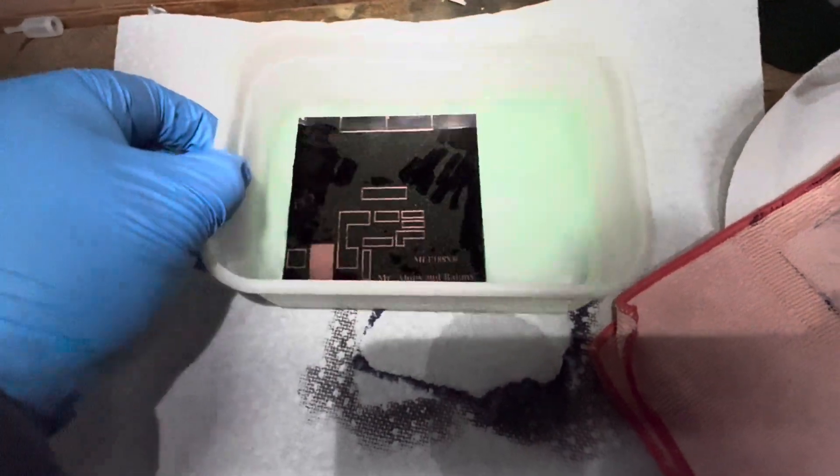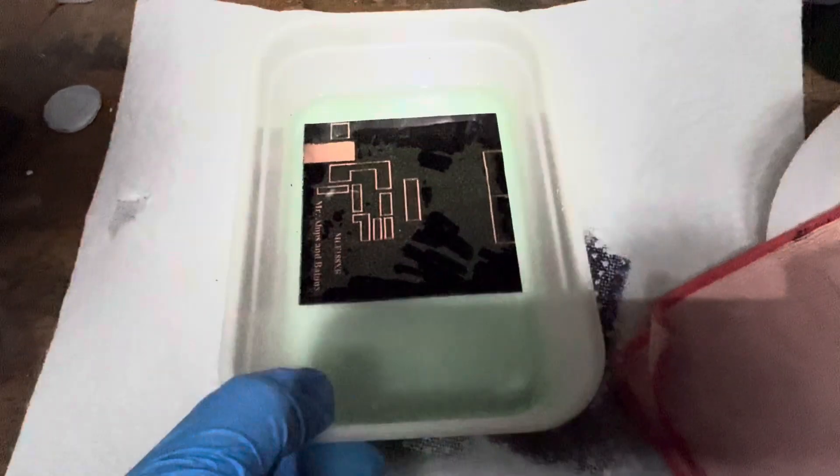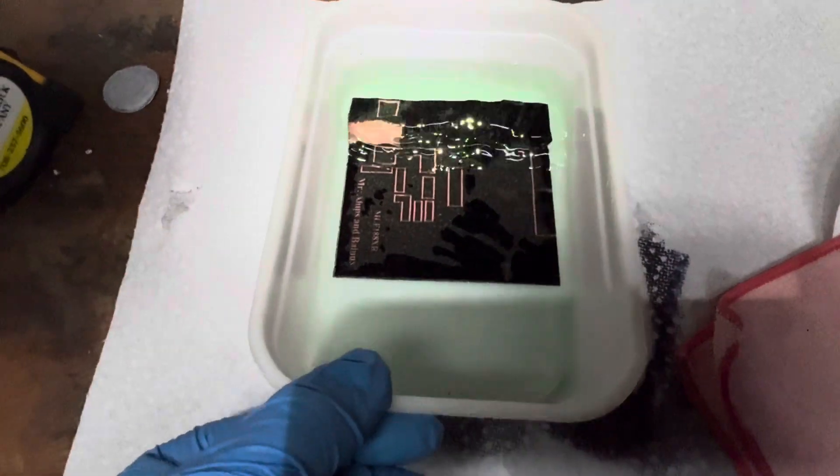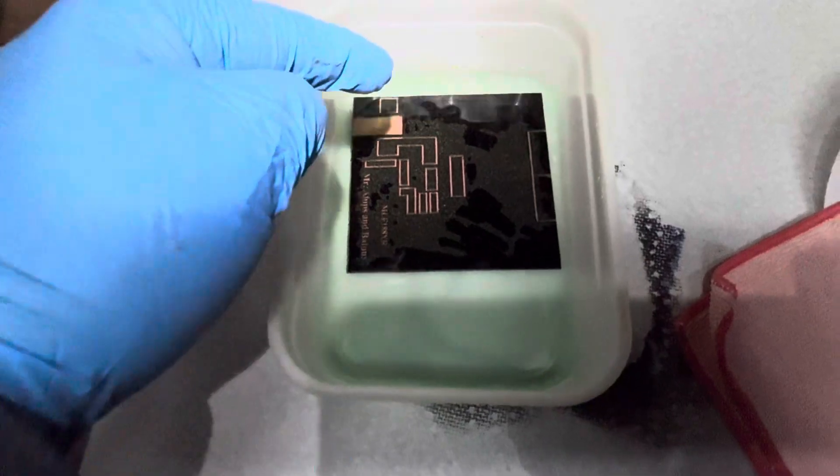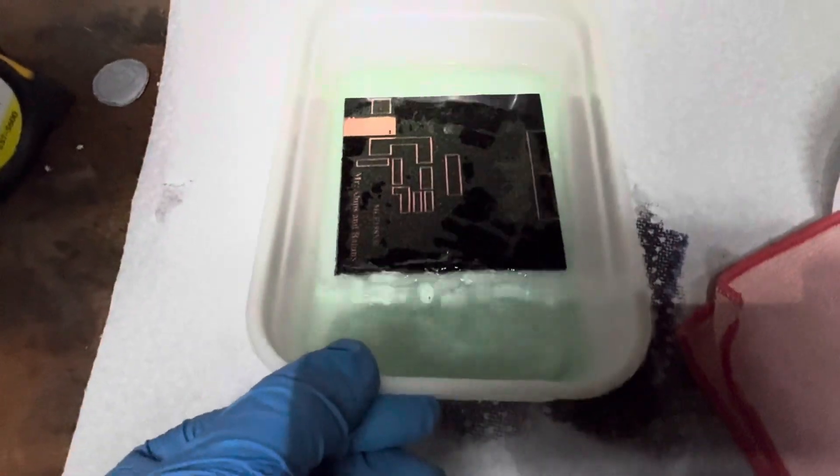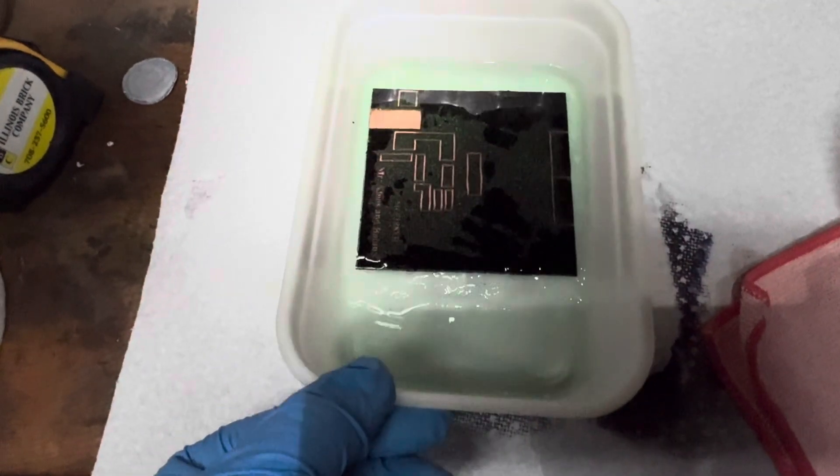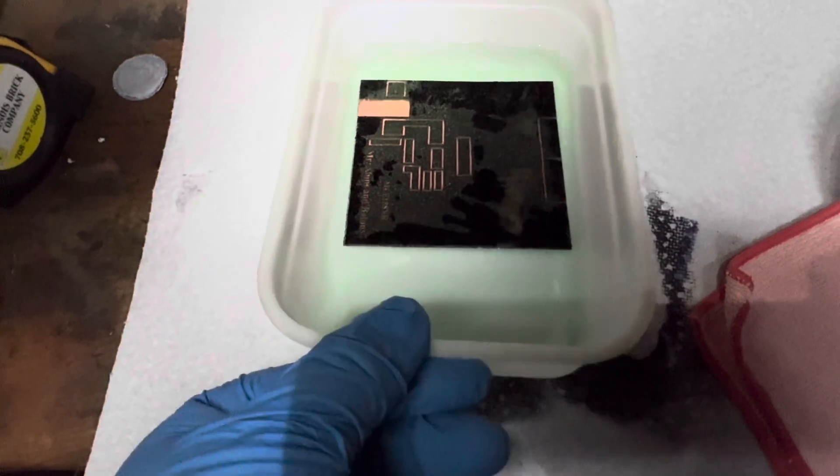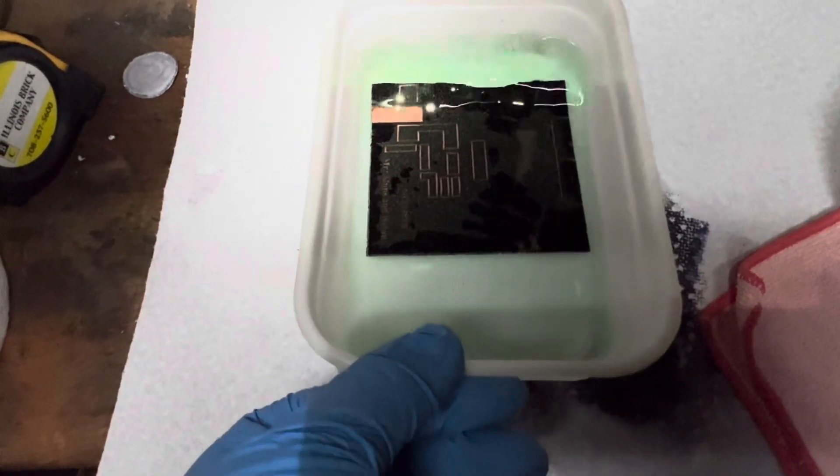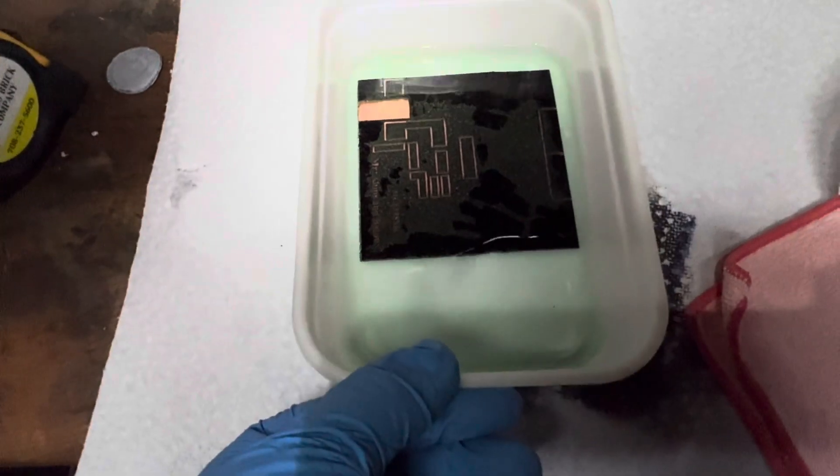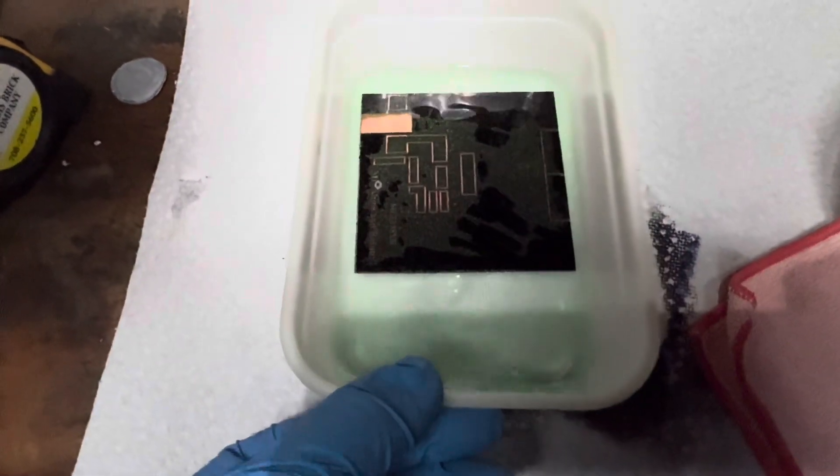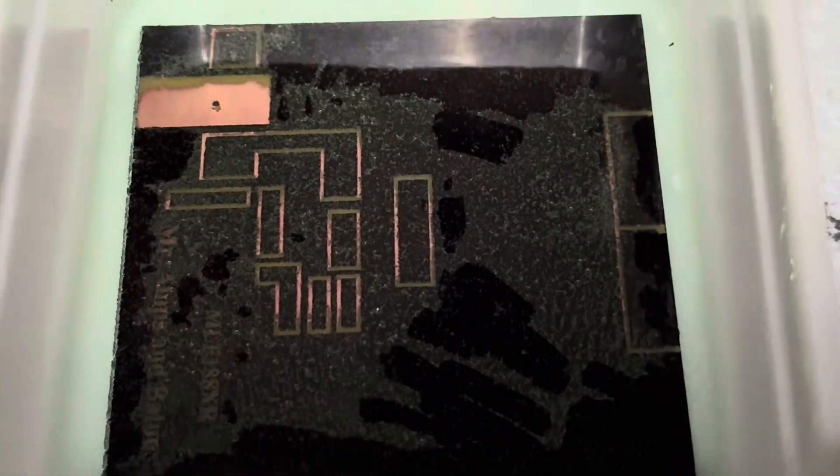This is the part where the bias is gonna be set up. The blank spot that I have here is where the attenuator is gonna be. You guys can see this is coming up pretty good, pretty fast. The solution is dissolving the copper pretty good.